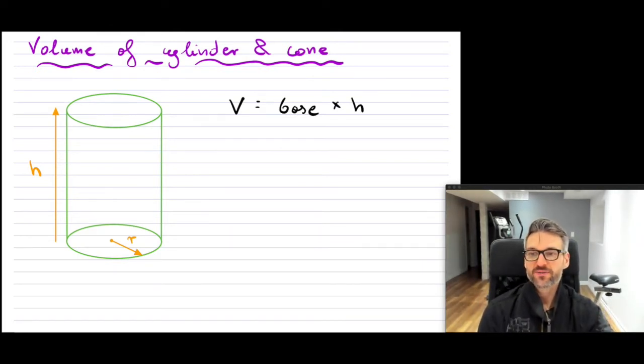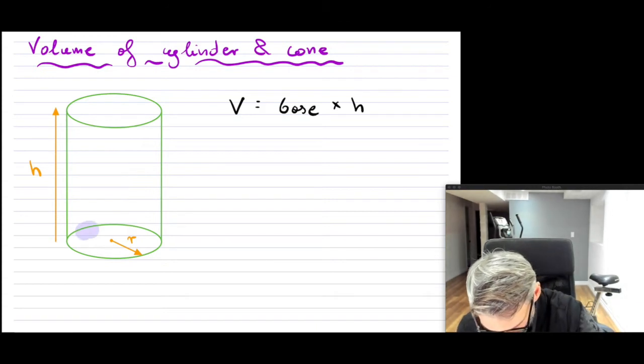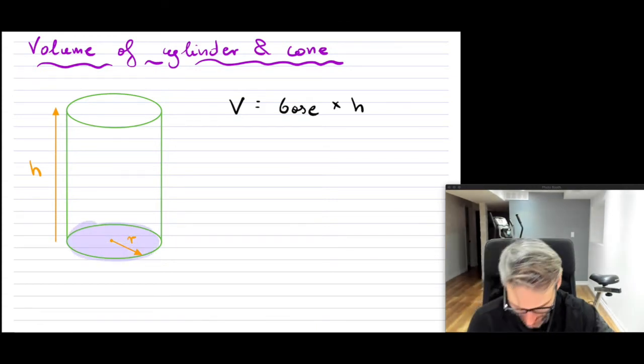Now, because we have a cylinder here, which we know the base of, and we kind of know the height of, we can measure those things. So we can figure out exactly what the volume of this cylinder is. So our base, which is this nice region right here. So that's our base.